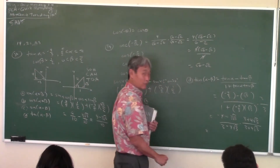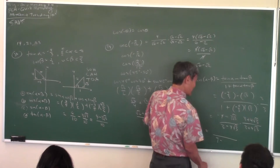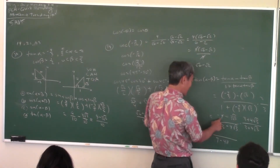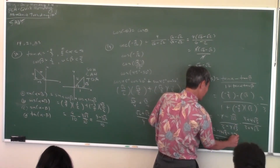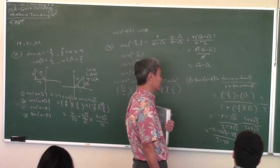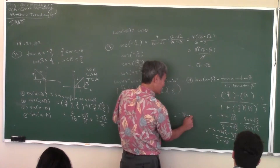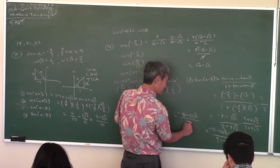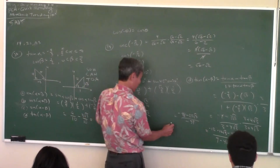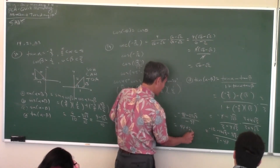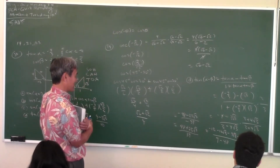Multiplying by the conjugate (3 minus 4 root 3): the denominator becomes 9 minus 48, which is negative 39. FOILing the numerator: first gives negative 12, outside gives negative 16 root 3, inside gives minus 9 root 3, last gives 12 times 3 which is 36. So you get (negative 48 minus 25 root 3) over negative 39. Multiply top and bottom by negative 1 to make it look prettier — it's easier on the eyes.